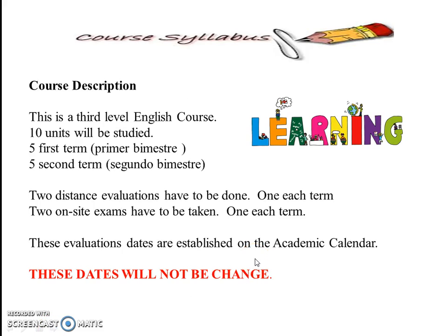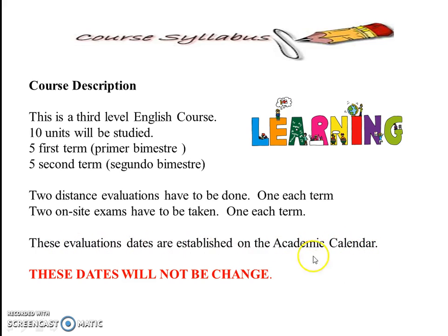This is the class description. This is a third-level English course. Ten units will be studied — five units in the first term and five in the second term, ten altogether. Two distance evaluations have to be done, one in each semester, and two on-site exams have to be taken, one in each term. These evaluation dates are established on your calendar — please take account of these dates, they are very important and will not be changed under any circumstances.